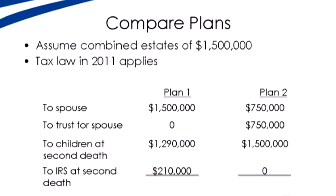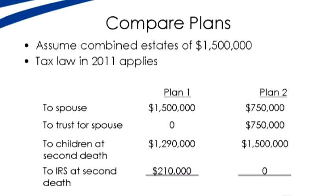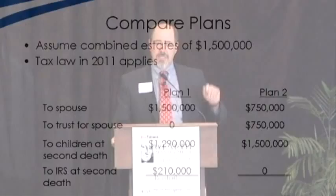She can keep it, spend it, save it, give it away, or even remarry and leave it to a new husband. Then at the second death, assuming she leaves the same $1,500,000 to the kids, there's a $1,500,000 inheritance for the children but only a $1 million exemption. The bracket at that point is roughly 37–39%, so the kids wind up paying $210,000 of taxes in this scenario. They still get $1,290,000 — almost $1,300,000 — but there's a $210,000 tax cost at the second death.